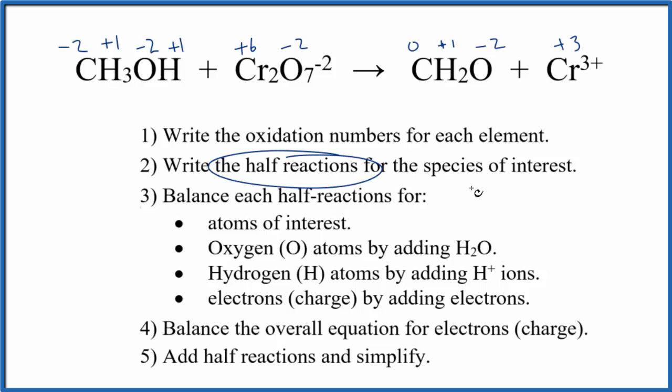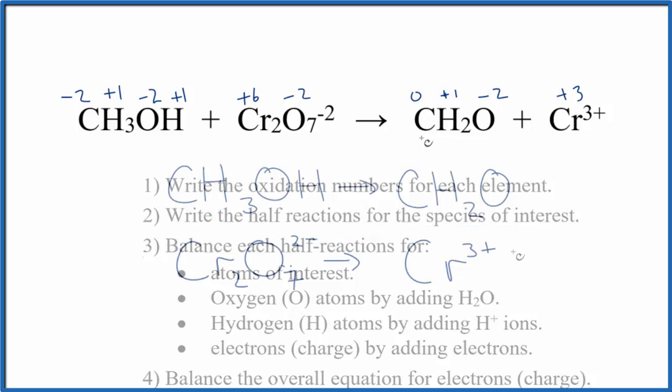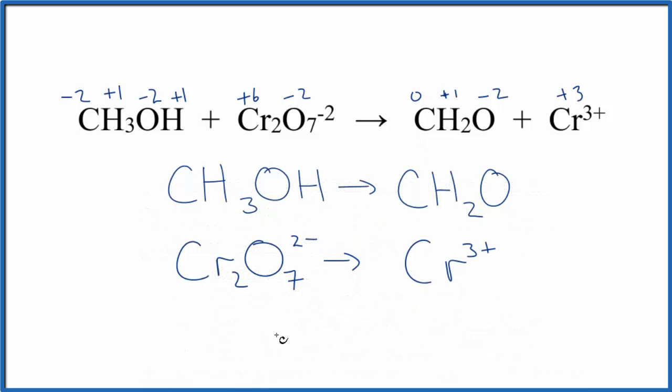Next we can write the half reactions for the species of interest. Those are the ones whose oxidation numbers have changed. So that'll look like this. So these are the half reactions.